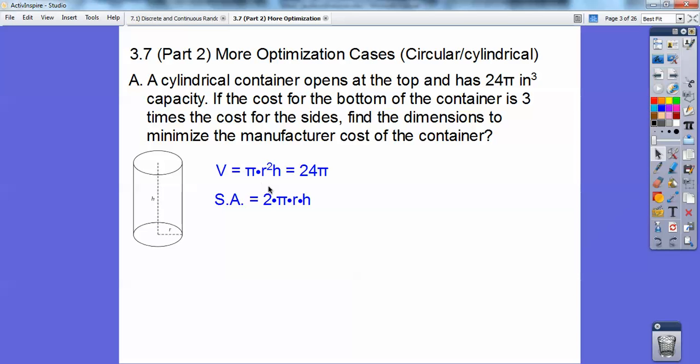Volume is πr²h, and they told us that was equal to 24π. So the π's will cancel, so r²h equals 24. And the surface area is 2πrh. That's given in the front of your book, so don't worry about that.